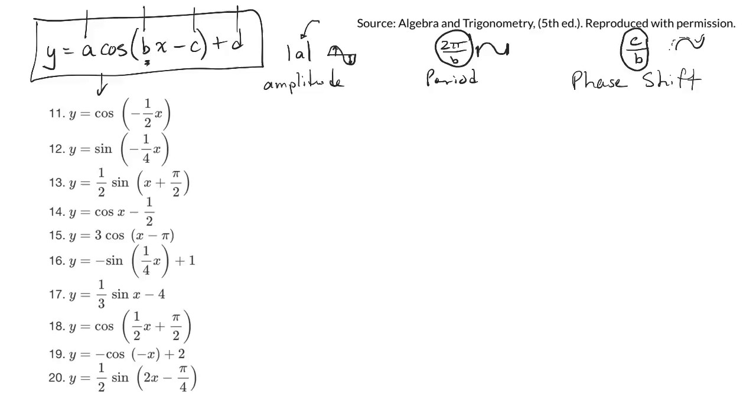All right, I'll just do a couple of them. Say this first, number 11. So number 11, it asks me for the amplitude. The number up front here is a 1. And so my amplitude is the absolute value of 1, which is just 1.